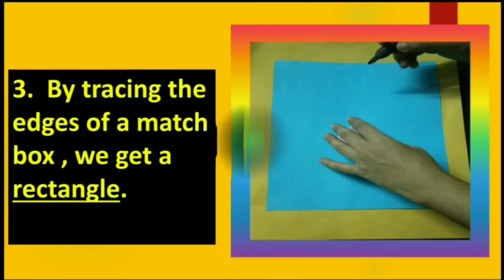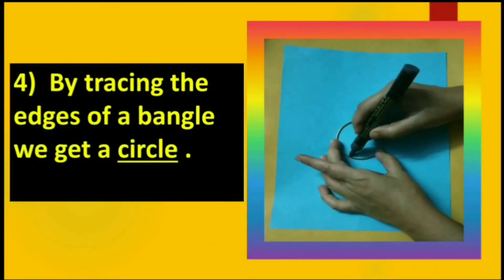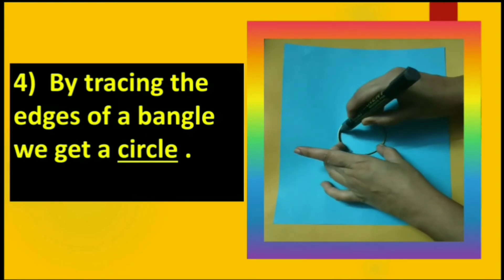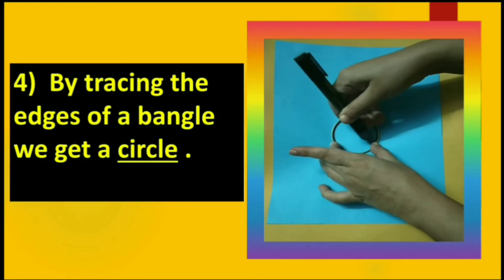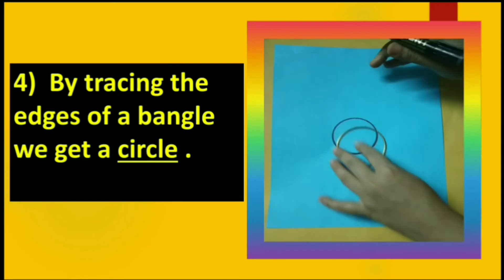Yes, this is how we can get a rectangle shape. Now children, here a bangle is used to get a circle shape. Just by tracing the edges of a bangle, we get a circle.